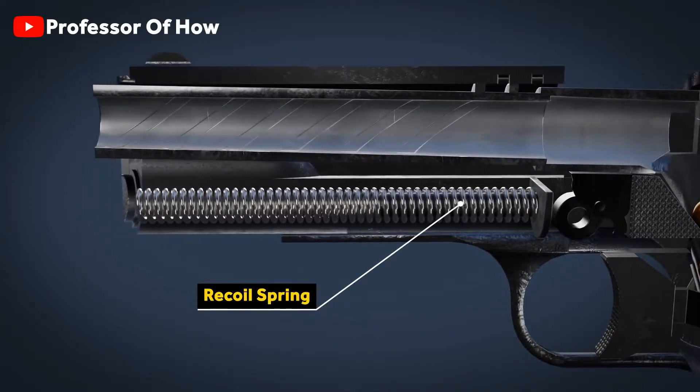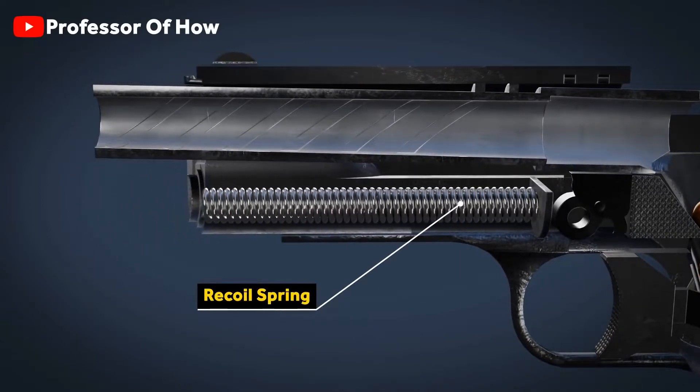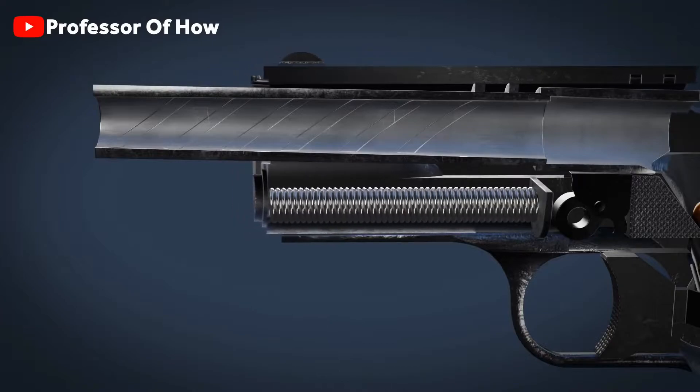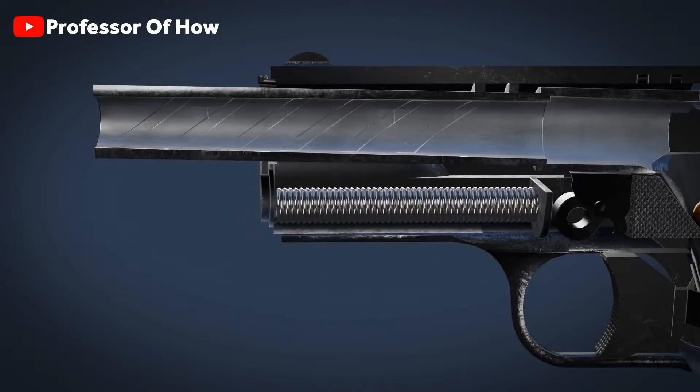The first action is the recoil spring in rest position, gains tension because of pressure, and tries its best to get back to its rest position.